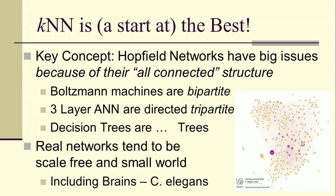But they are a good start. A key concept here is that Hopfield networks have the spurious states, and the reason that they have some of these very big issues is because of their all-connected nature. Whereas Boltzmann machines are what are called bipartite graphs. Three-layer artificial neural networks are directed tripartite graphs, and decision trees are, no big surprise, trees.